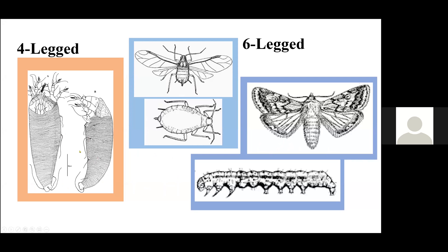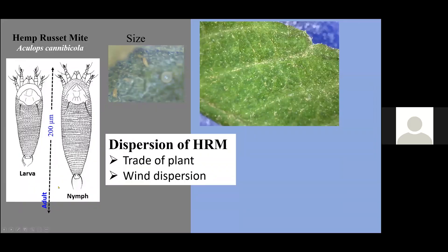The hemp russet mite is a little bit different from other mite species, even from spider mites and ticks, because they share only two pairs of legs. In addition, they are microscopic. They can get up to 200 microns in size, as you can see here. You can compare this size with an egg of the spider mite, very tiny.